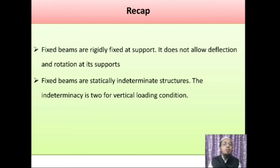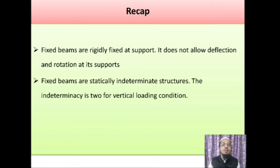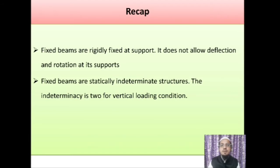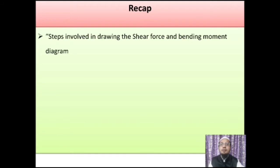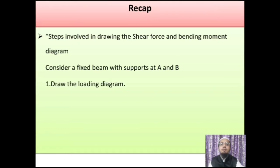First, let's have a recap of the points which we have already covered. We have now known about fixed beam — it is rigid at its supports and does not allow any deflection or rotation at its support. Such beams come under statically indeterminate structures, and indeterminacy for a fixed beam subjected to vertical loading is taken as 2. We have also discussed steps involved in the construction of shear force and bending moment diagrams. We considered a fixed beam of span L having supports A and B which are fixed. After drawing the loading diagram, we found four unknown support reactions and moments at the supports: VA, VB, MA and MB.